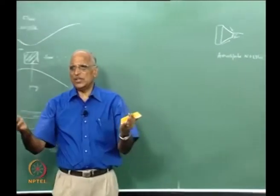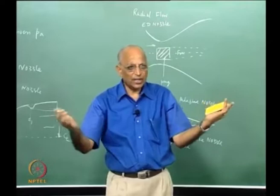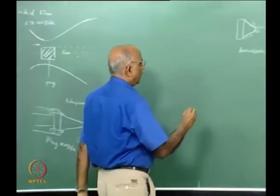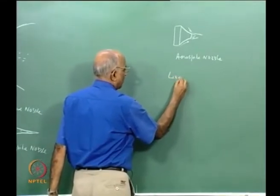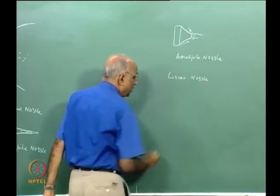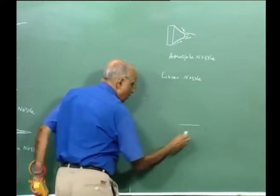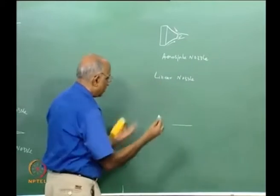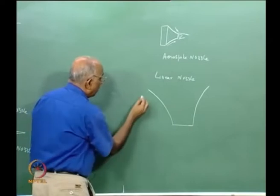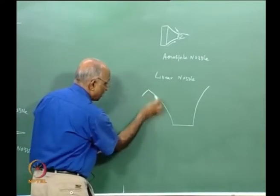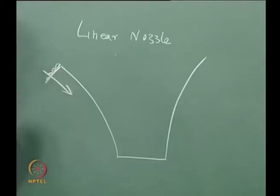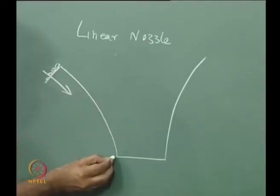But why should we always think in terms of a cylinder or a bell? Why not open out the bell and make it linear? If instead of a cylinder I stretch it out, I call it a linear nozzle. I open out the bell into a flat shape and have this as a ramp contour. I allow the gases to come along this ramp, which guides the flow.